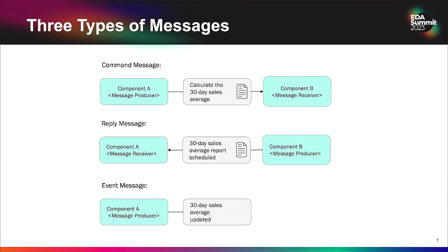The third kind is an event message. This is where we tell someone when something has happened. Component A decides to say that the 30-day sales average has been updated and component B is interested in knowing that. So there's more of an event-driven notification here. Those are the three types of messages we oftentimes deal with in APIs.